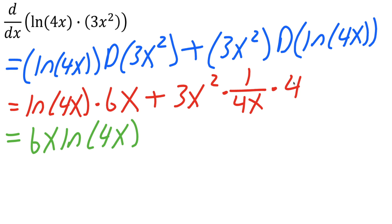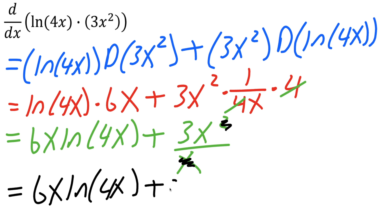We have 6x·ln(4x). Here it's being multiplied by 4 and divided by 4, so it cancels. We can say plus 3x² divided by x. And x² divided by x, this x cancels and you just get a regular x.